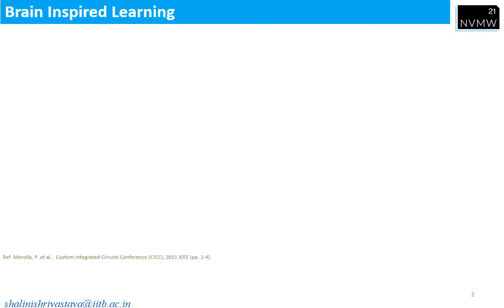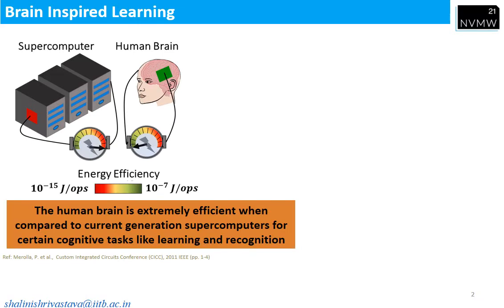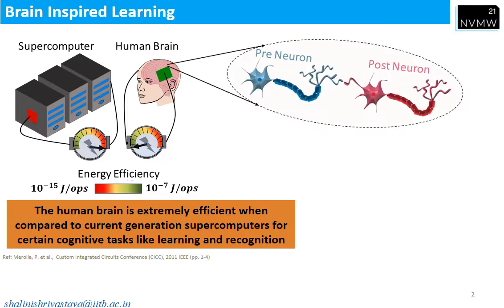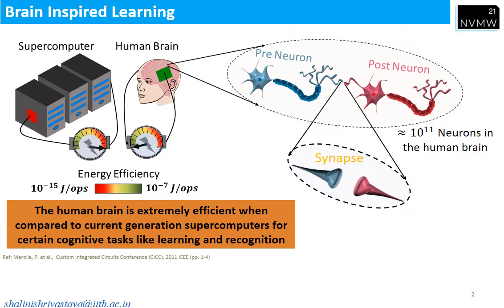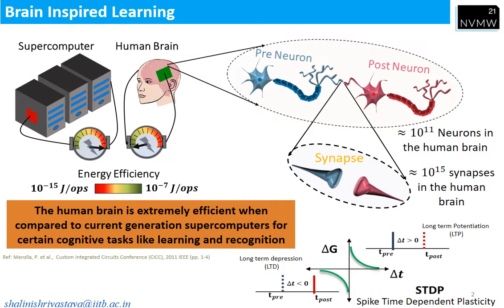Brain-inspired learning — in this I will explain what is a synapse. Compared to the human brain, a supercomputer based on von Neumann architecture is less energy efficient and requires more area. The human brain consists of a network of neurons, with about 10^11 neurons in total. These neurons are connected through synapses, and there are about 10^15 synapses in the human brain. The connectivity of neurons is defined by the conductance change in the synapse.